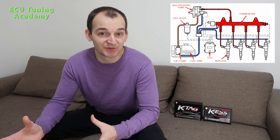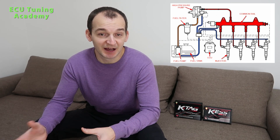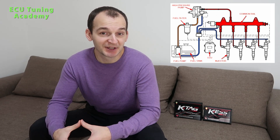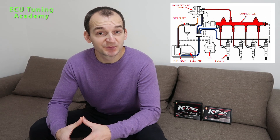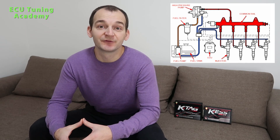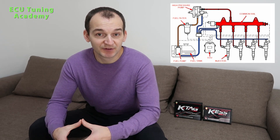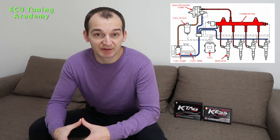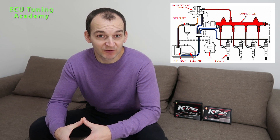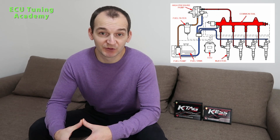We have the fuel inside our fuel tank, and outside of the fuel tank we have the low pressure electric fuel pump which pumps the fuel up to the fuel filter. Outside of the fuel filter we have outgoing manifolds which lead to the high pressure fuel pump.